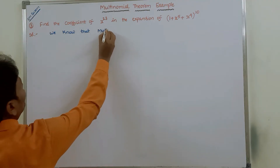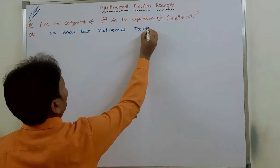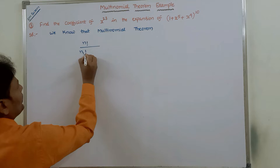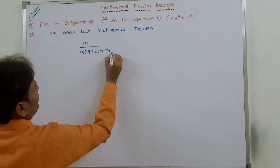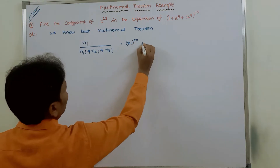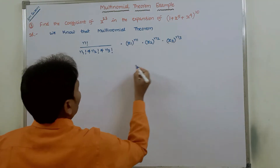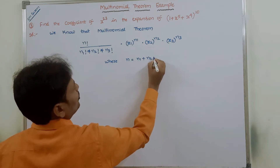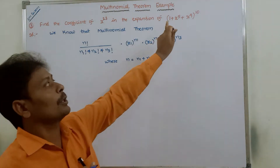The multinomial theorem states: the expansion is the sum over all combinations of n factorial divided by n1 factorial times n2 factorial times n3 factorial, multiplied by x1 power n1 times x2 power n2 times x3 power n3, where n equals n1 plus n2 plus n3. This is the multinomial theorem when the expression contains three terms.